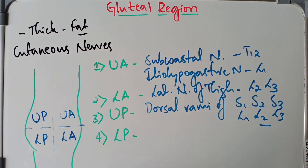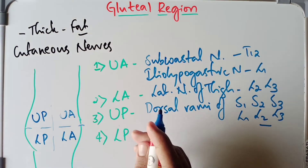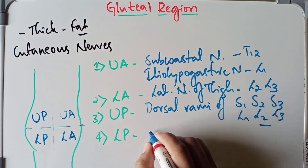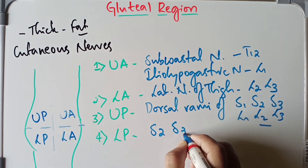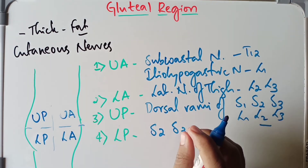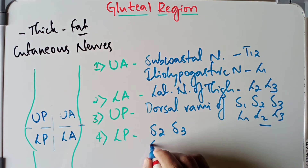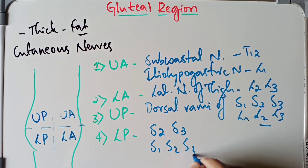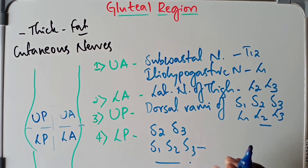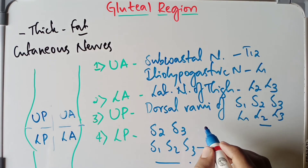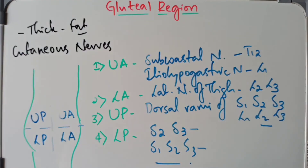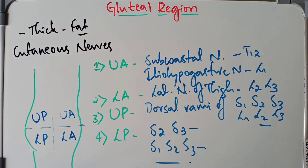The lower posterior compartment is supplied by the perforating cutaneous nerves of S2 and S3 spinal segments, and also the posterior cutaneous nerve of the thigh, which includes S1, S2, and S3 spinal segments. That covers the cutaneous nerves of the gluteal region.